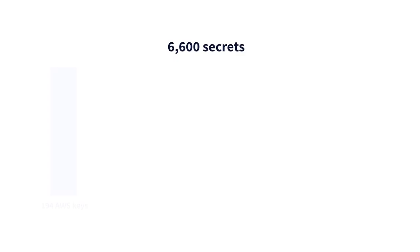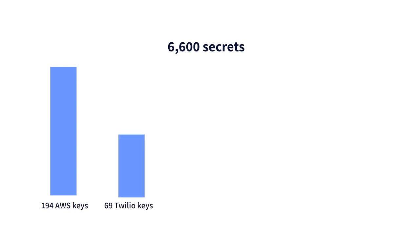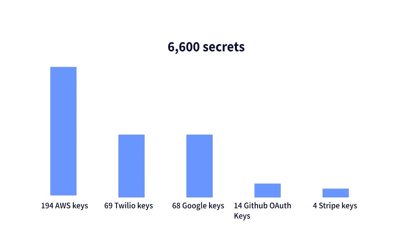We also realized that because this was public, they would be rotating a lot of these keys anyway. Instead, we decided to look at other indicators, such as when the keys were committed, to give us an indication of whether we think they were valid at the time of the leak. In total, we found about 6,600 different secrets inside the Twitch code repositories. This included 194 AWS keys, 69 Twilio keys, 68 Google API keys, 100 database connection strings, 14 GitHub OAuth tokens, and even 4 Stripe keys — and this is just to name but a few.